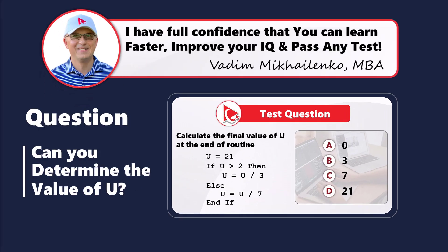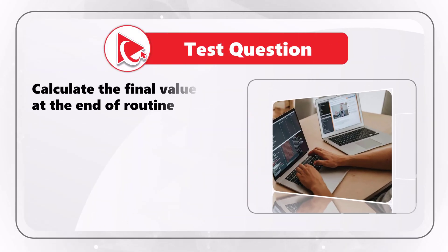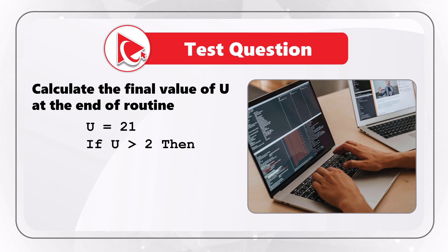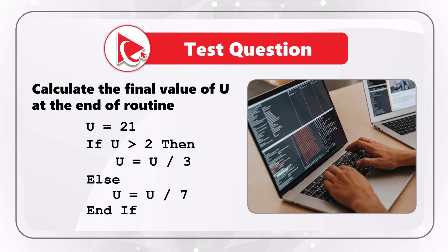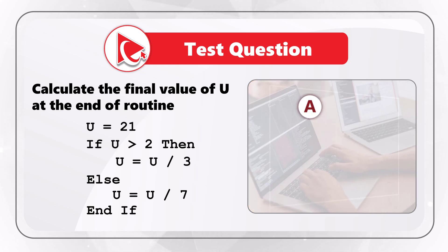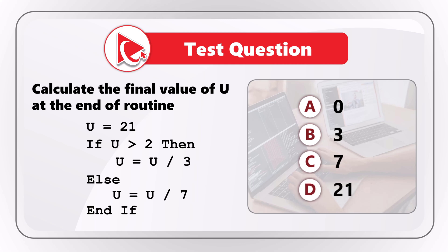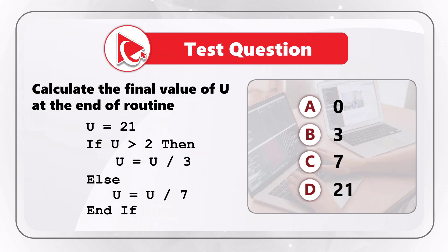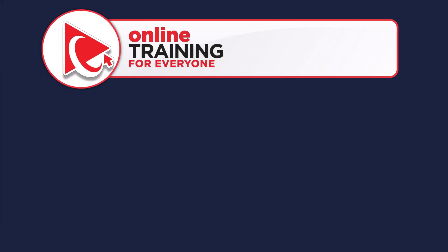Here's an amazing question where you need to calculate the final value of u at the end of the routine. The initial value of u is 21. If u is greater than 2, then u equals u divided by 3; else u equals u divided by 7. Select the final answer from four choices: A) 0, B) 3, C) 7, D) 21. Pause the video if you need more time to come up with the solution.